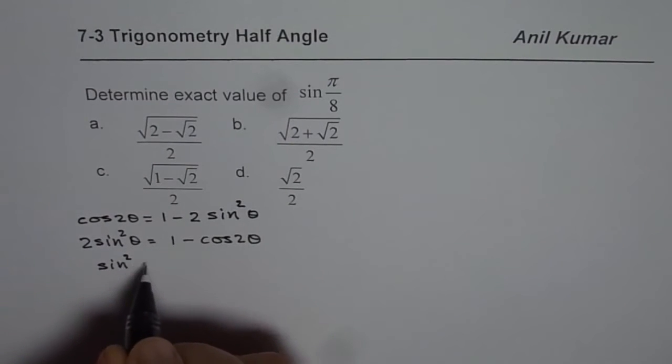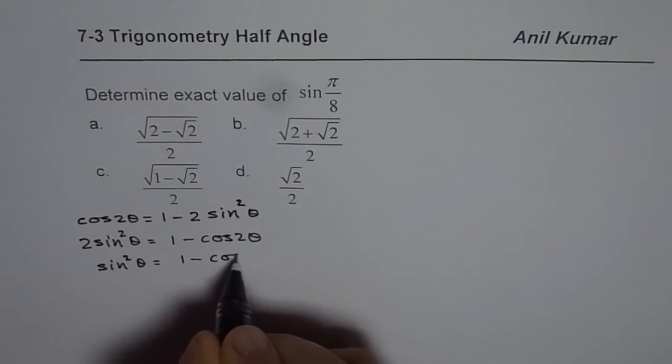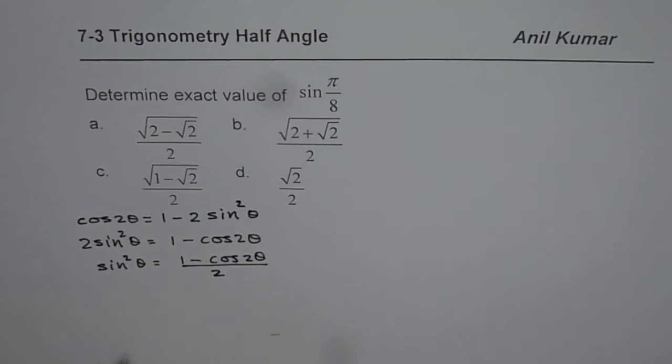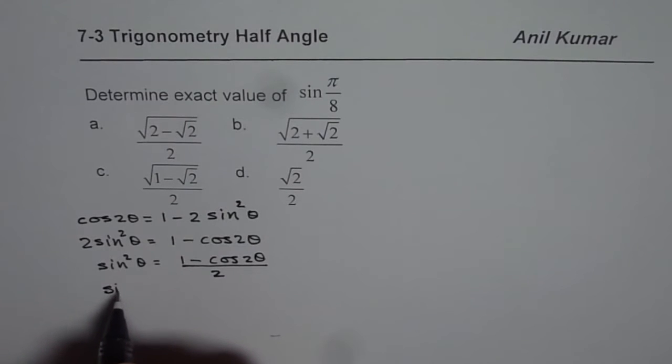Sine square theta equals to 1 minus cos 2 theta divided by 2. And then we can say sine theta